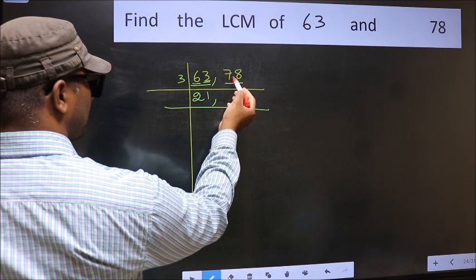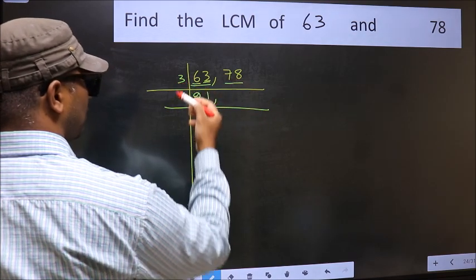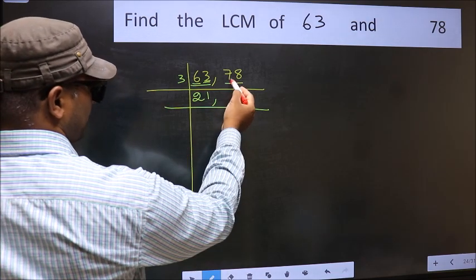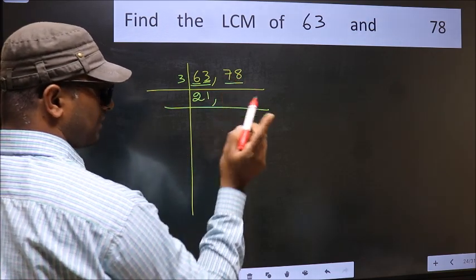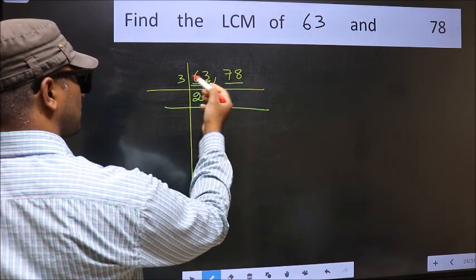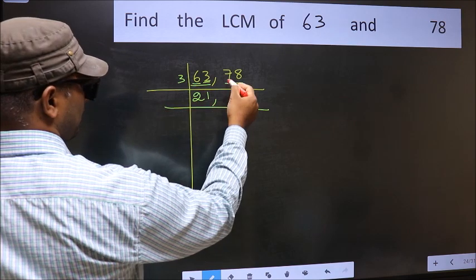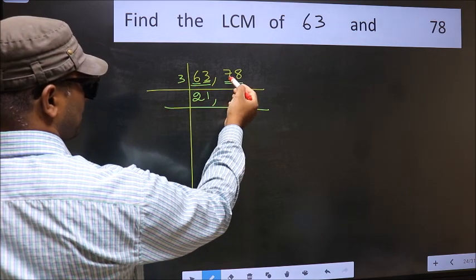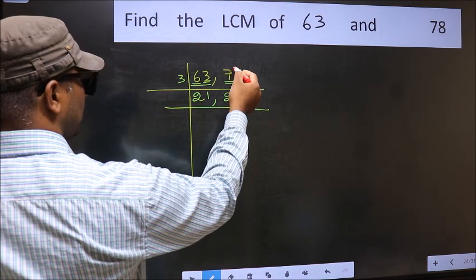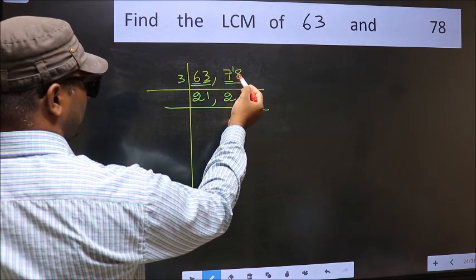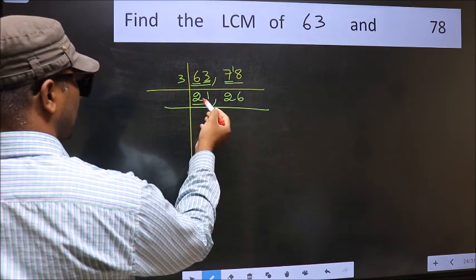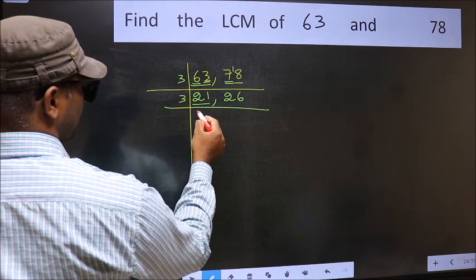To check whether it is divisible by 3 or not, add the digits. 7 plus 8, we get 15, and 15 is divisible by 3. So this number is also divisible by 3. First number 7. A number close to 7 in the 3 table is 3 times 2 is 6. 7 minus 6 is 1. 1 carried forward gives 18. When do we get 18 in the 3 table? 3 times 6 is 18. Now here we have 21. 21 is 3 times 7.